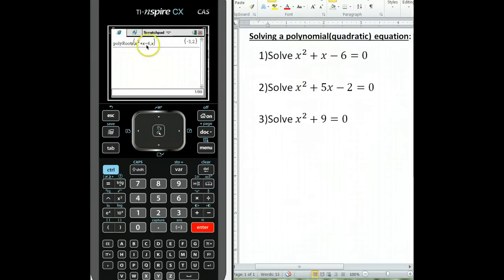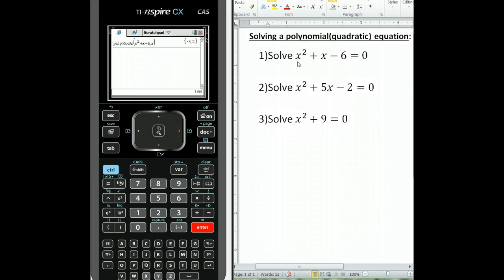The calculator has just found that the roots of the polynomial equation x squared plus x minus 6 are x equal to negative 3 and x equal to 2.